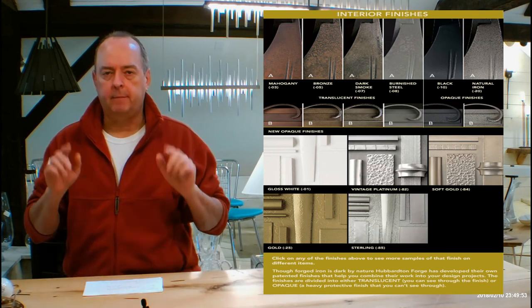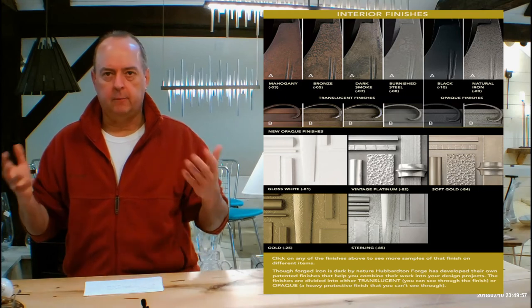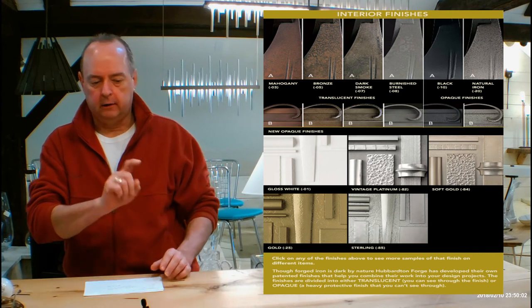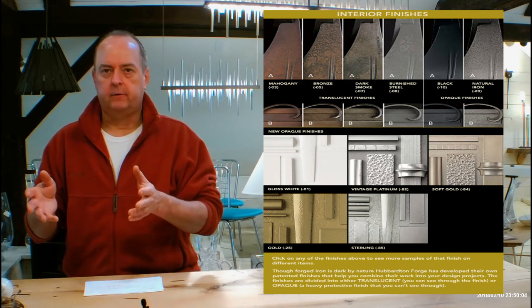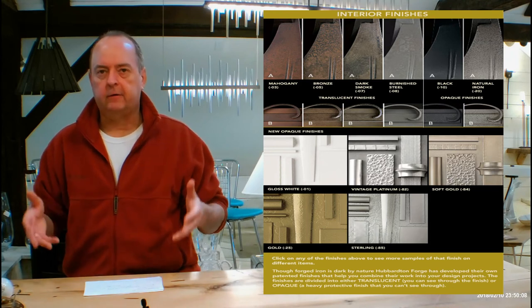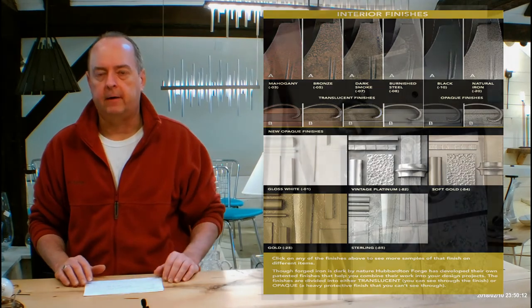When you're done with all that, come back down to that chart. You can click on any of those pictures and see a lot more samples of Hubberton Forge fixtures in that finish. If you want to see a bunch of stuff in dark smoke, click on dark smoke. If you want to see a bunch of stuff in vintage platinum, do the same. And so on and so on. That's a great way for you to see a lot of Hubberton Forge stuff in different finishes and really take advantage of that, okay?